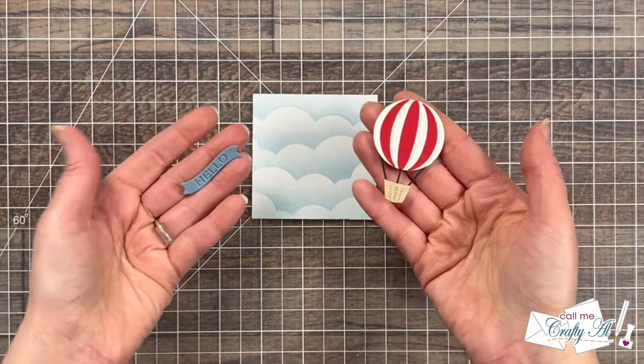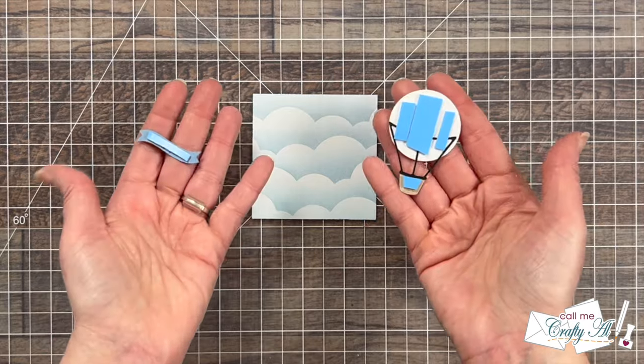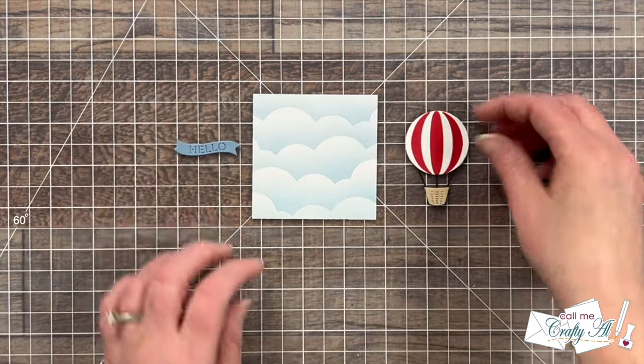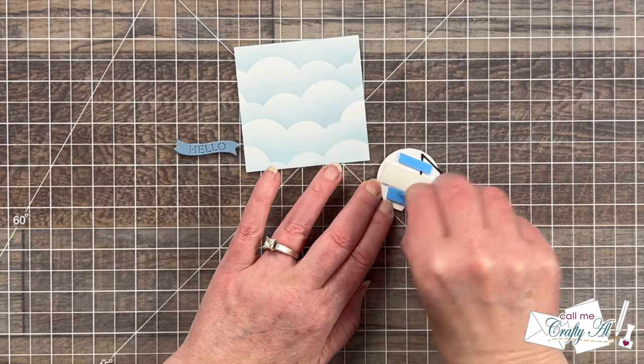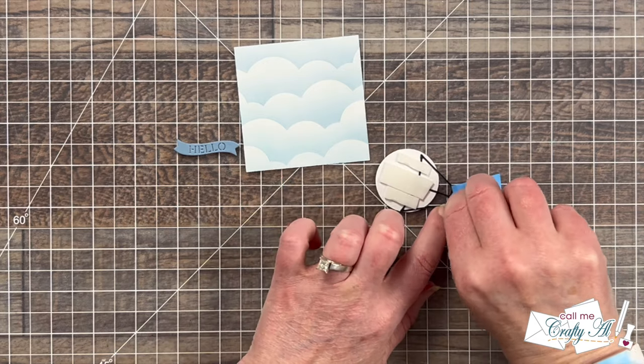Once my hot air balloon was all dry I added some foam tape to the back of it and the little hello banner and got both of these pieces added to the sky background.